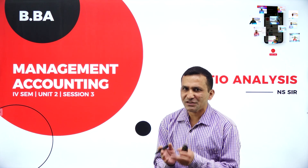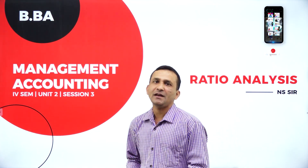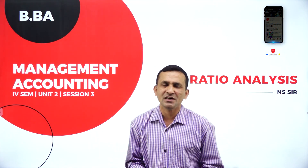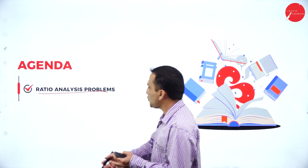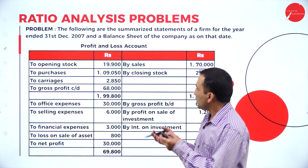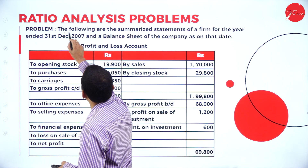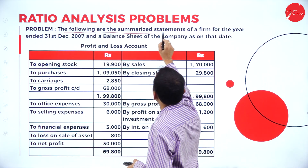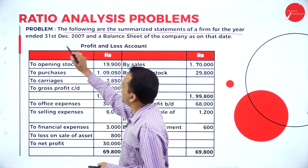In the last two sessions — one session covered the complete theory part and the second session was related to problems — today my agenda is ratio analysis with a few problems. There is one problem for ratio analysis: the following are the summarized statements of the firm for the year ended 31st December 2007.